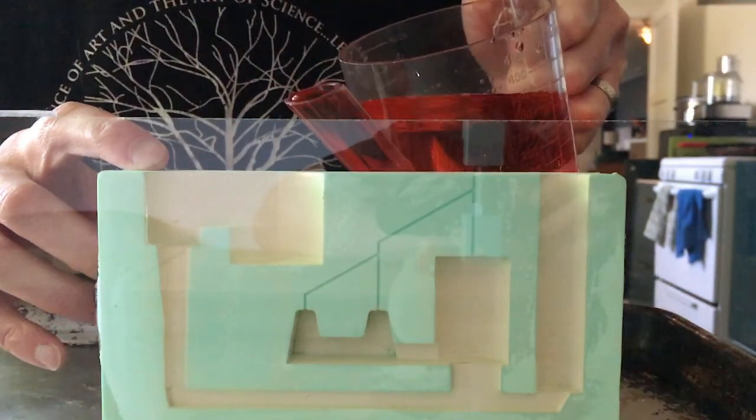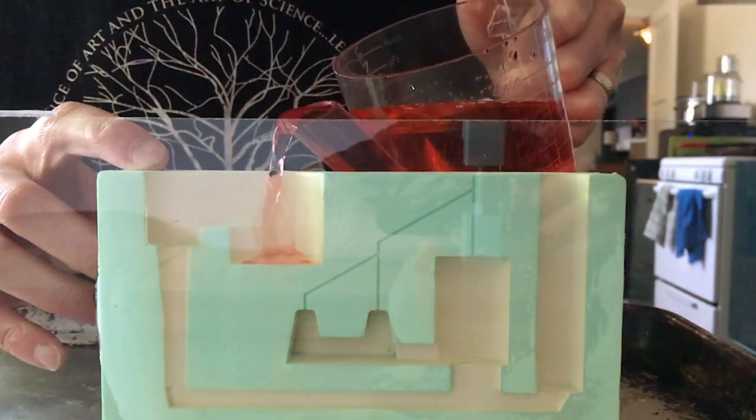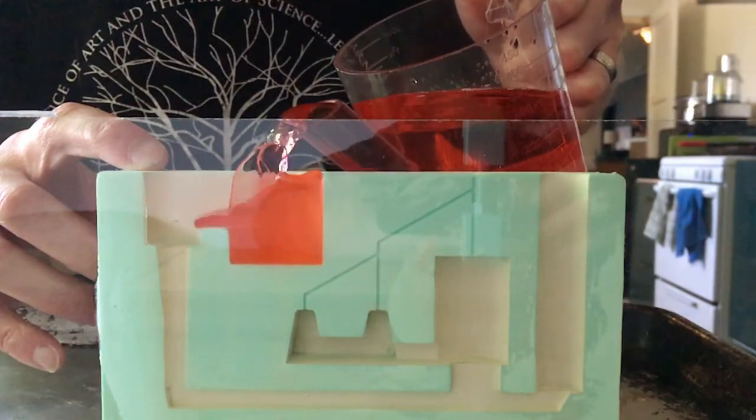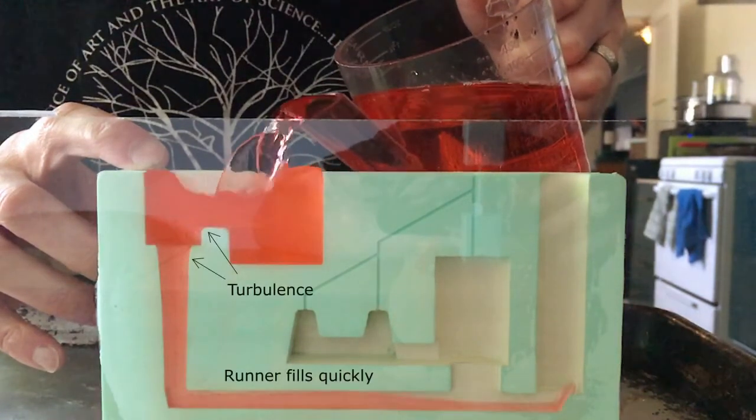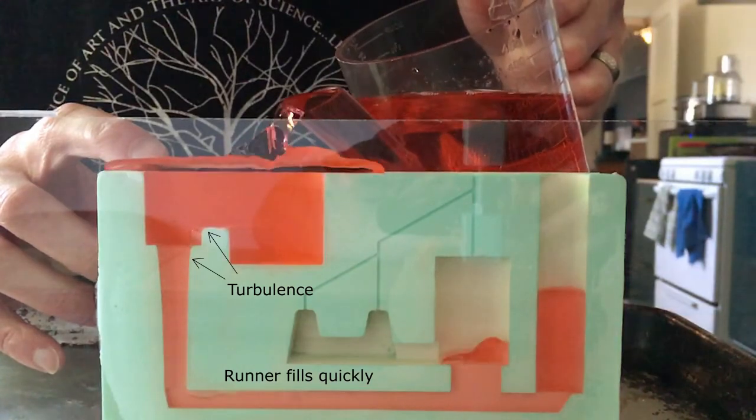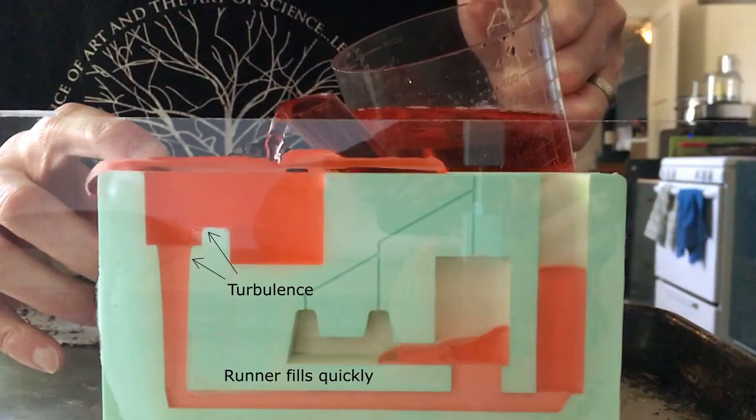Okay. So first the cup is going to fill and you're going to see some turbulence form on those sharp edges at the top of the sprue. And I've been warned that you definitely don't want sharp corners there and I can see why.